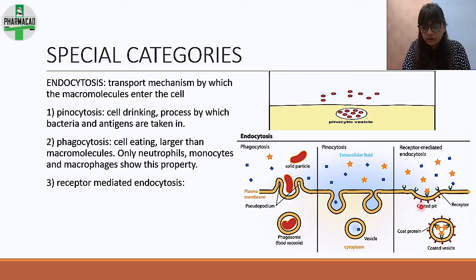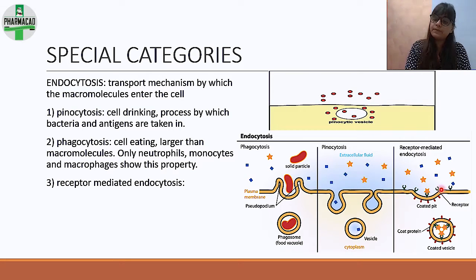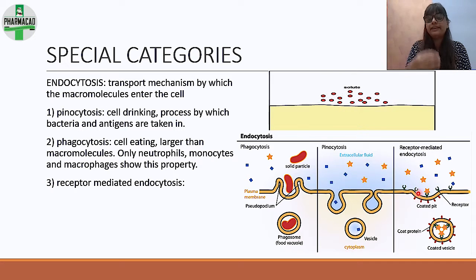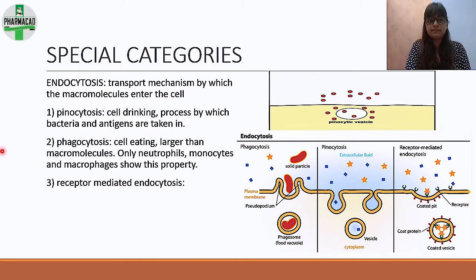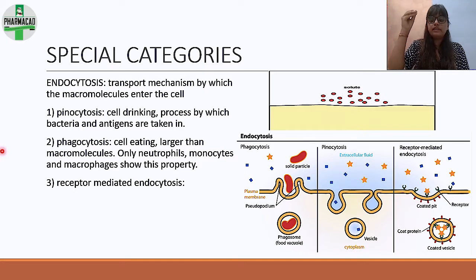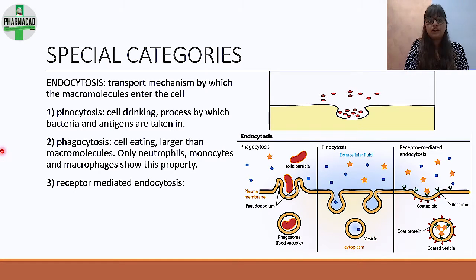The third type of endocytosis is receptor-mediated endocytosis. Here there are specific receptors on the cell surface that are specific to a certain substance. When the substance binds to the receptor, forming a receptor-substance complex, that complex is transported inside the cell.